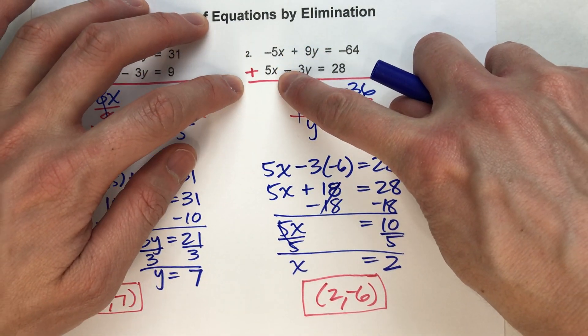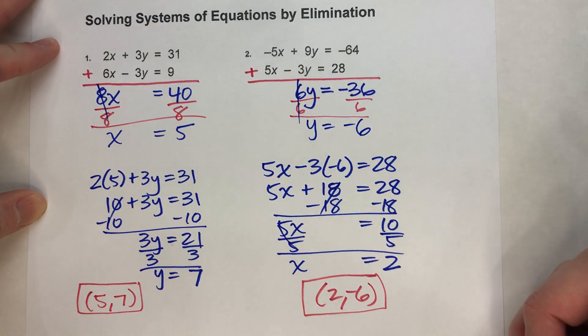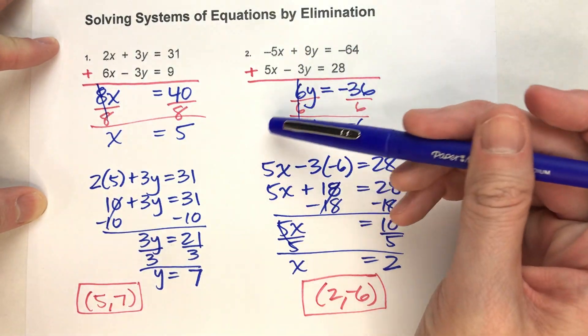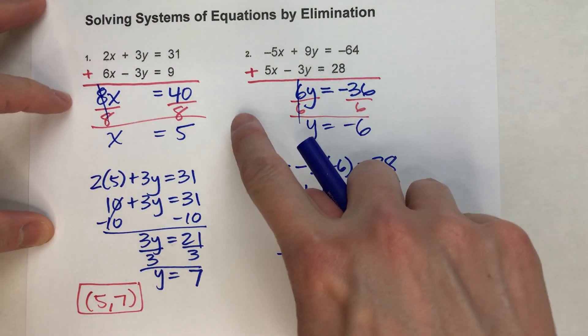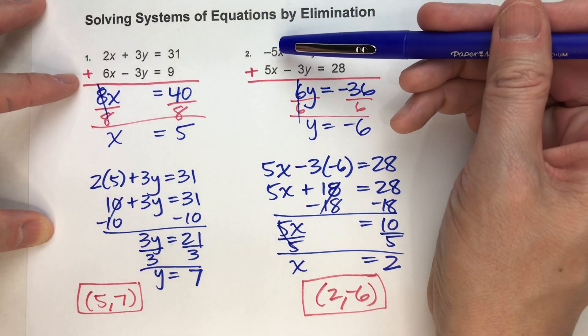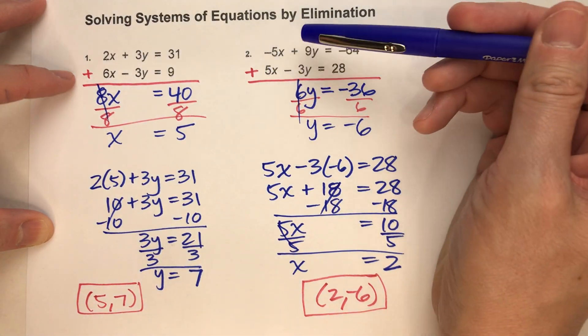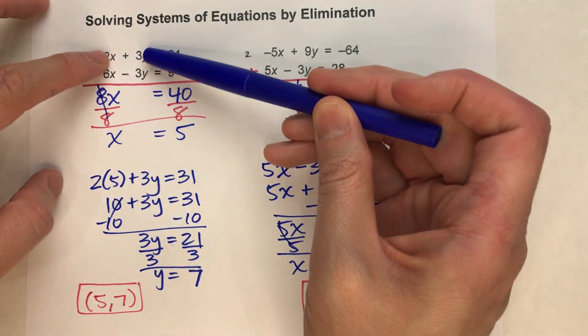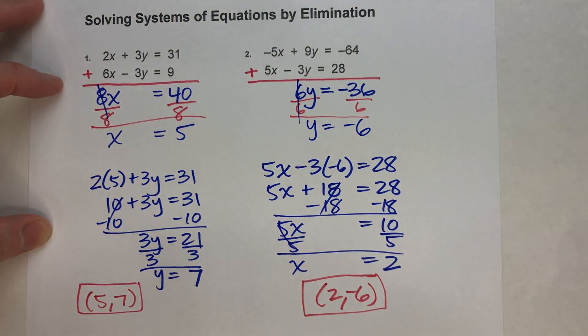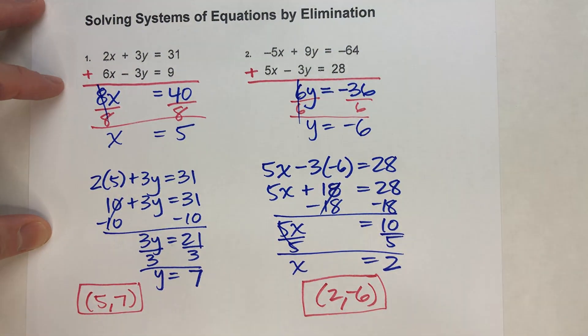The whole reason why we're adding them together is because by adding them together, it eliminates the x's, or in this case over here, eliminating the y's. So this method works with only these very specific cases.